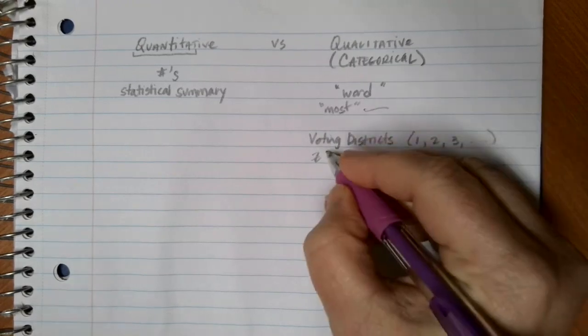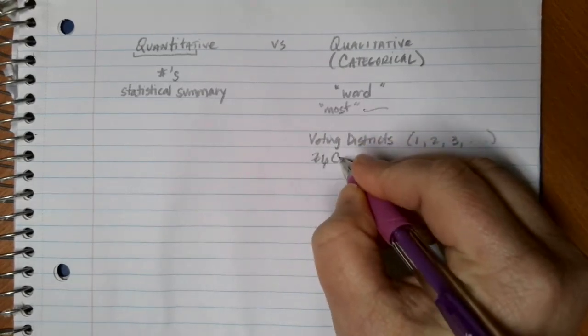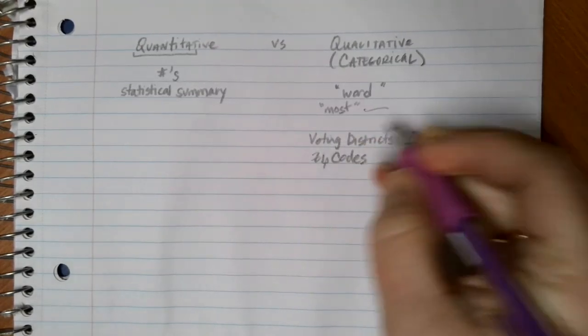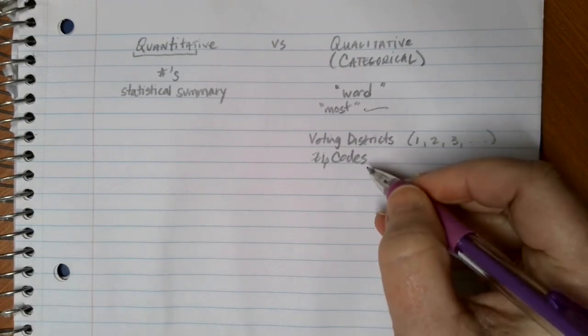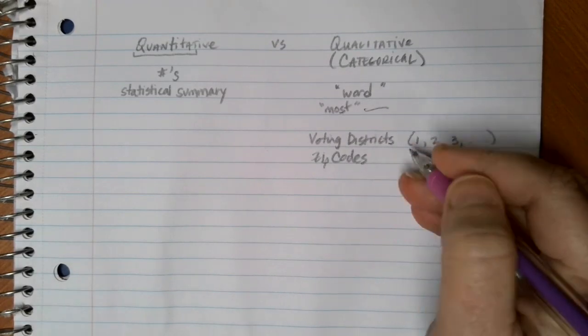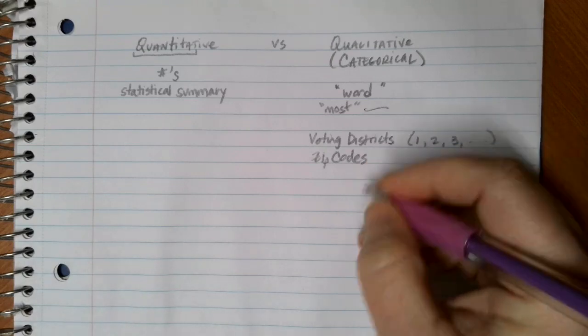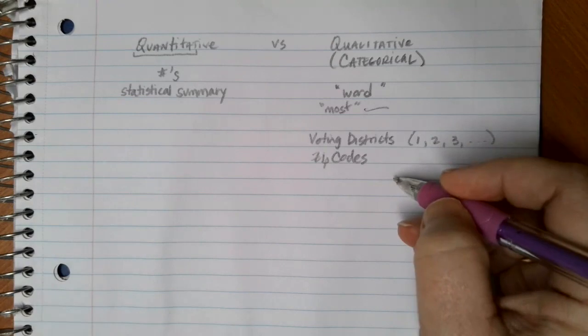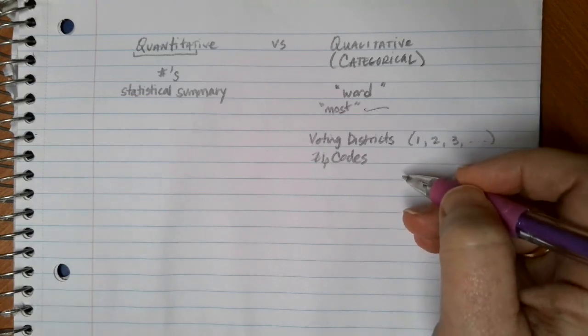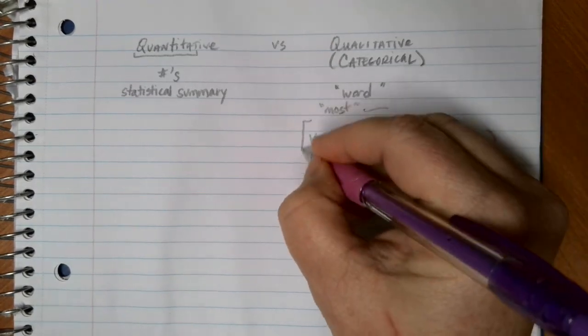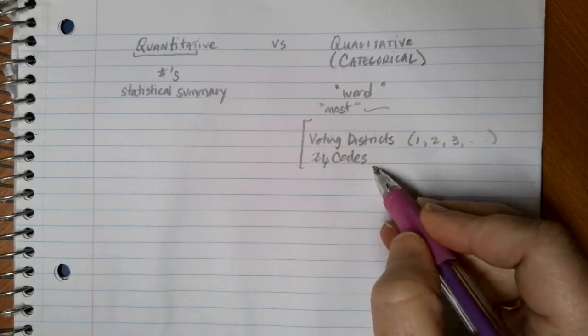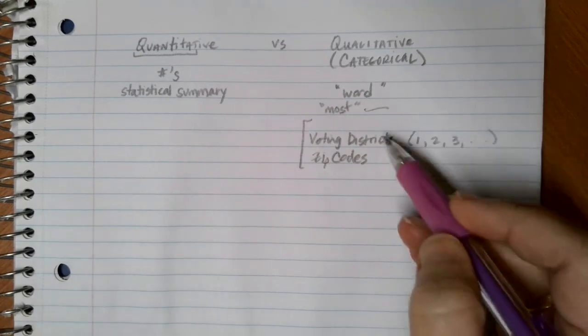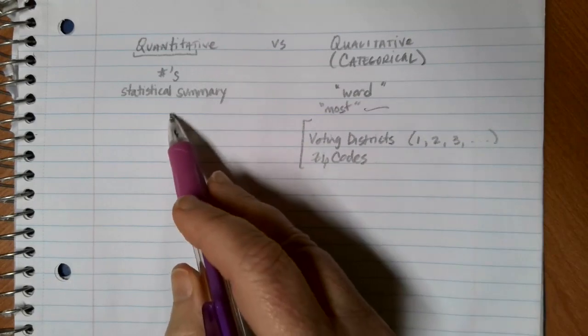Another good example of categorical data that includes numbers would be something like taking zip codes. Again, you can add zip codes up and divide them and you're going to get an answer, but it doesn't have any meaningful information. The average of all of the zip codes of the mail that you received yesterday isn't necessarily going to give you any useful pieces of information. In both of these, these are examples of using numbers to categorize groups rather than giving you a measurable quantity.